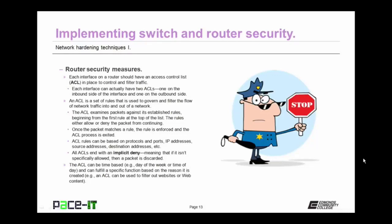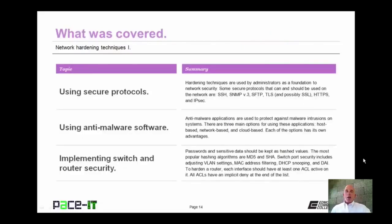ACL rules can be based on protocols and ports, IP addresses, source addresses, destination addresses, and more. All ACLs end with an implicit deny statement — meaning that if it isn't specifically allowed, the packet is discarded. The ACL can be time-based, as in day of the week or time of day, and can fulfill a specific function, such as filtering out websites or web content.